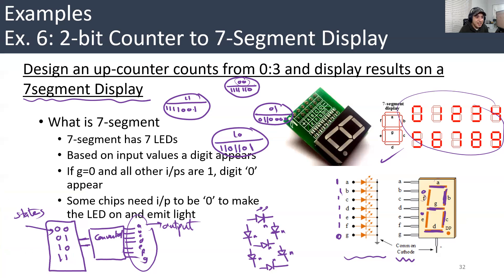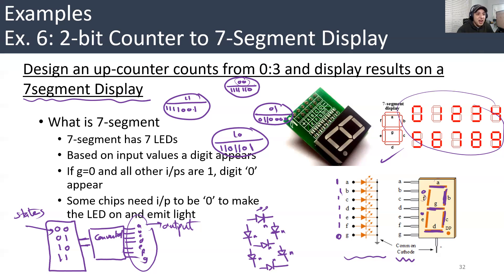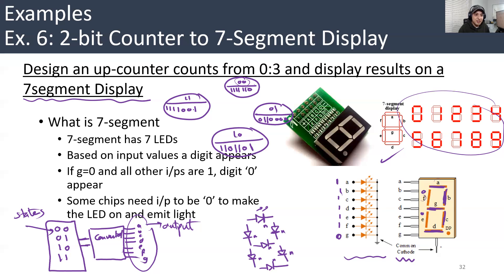Another point: you are always going up — it's an up counter. So basically whenever the clock comes, just increase the count. No input is needed. Remember in the up-down counter we needed the input to control the flow — either up counting or down counting. Here we don't need that; we're always going up, so no input is needed.